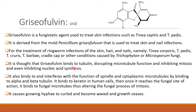Griseofulvin binds to tubulin, disrupting microtubule function and inhibiting mitosis, and even inhibiting nucleic acid synthesis. It also binds to and interferes with the function of spindles and cytoplasmic microtubules by binding to alpha and beta tubulin — structures you may have learned about in biochemistry or cell biology. Griseofulvin also binds to keratin in human cells, and once it reaches the fungal site of action it binds to fungal microtubules, altering the fungal process of mitosis.